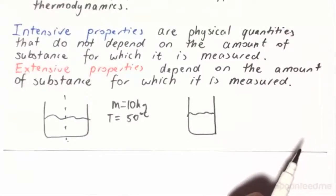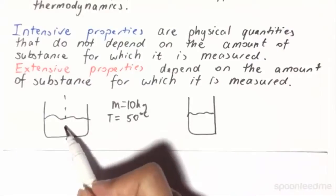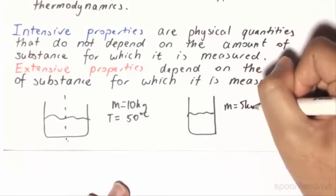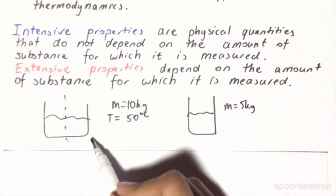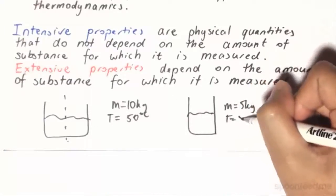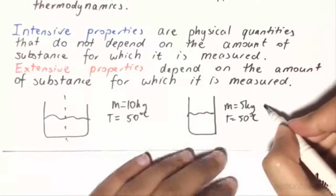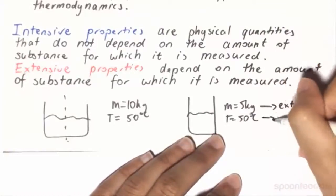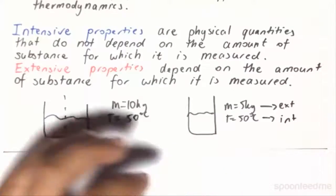What will be the mass and the temperature now? Since it's being halved, the mass itself has now changed to 5 kilograms. However, the temperature is still going to be 50 degrees Celsius. Thus, mass is the example of an extensive property, and temperature is the example of an intensive property.